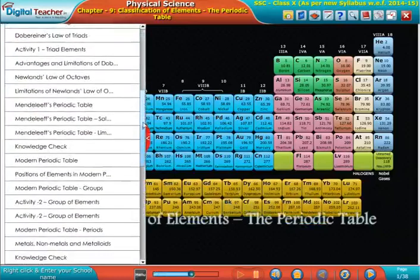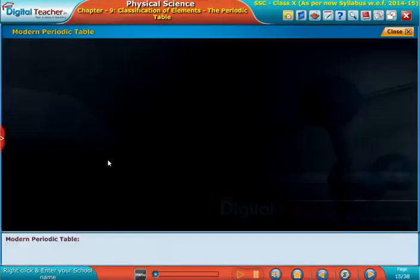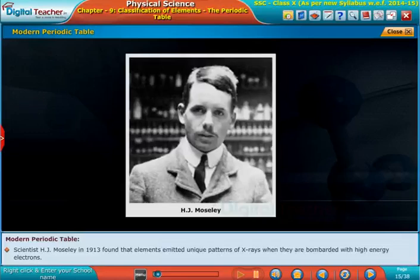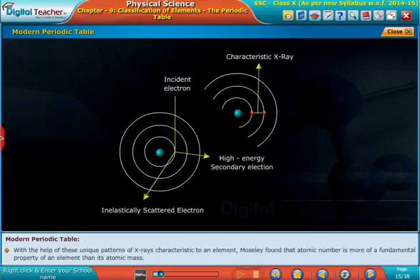Welcome to the chapter on classification of elements and the modern periodic table. Scientist H.J. Moseley in 1913 found that elements emitted unique patterns of X-rays when bombarded with high-energy electrons.